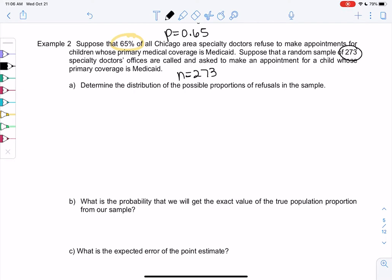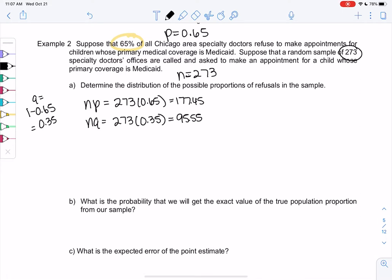So let's find the distribution. To find distribution, we need to check those requirements. So NPE and NQ. So NPE will be 273 times 0.65, and NQ will be 273 times 1 minus 0.65, which is 0.35. So for NPE, I get 177.45, and for NQ, I get 95.55. Since they're both at least 10, the requirements are met. We can use the normal curve.